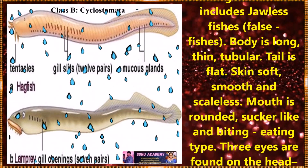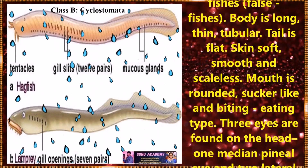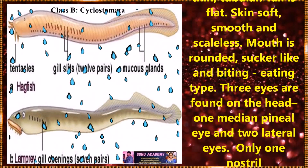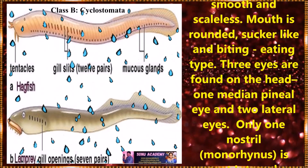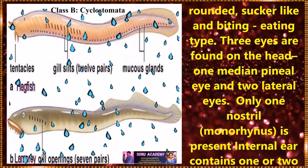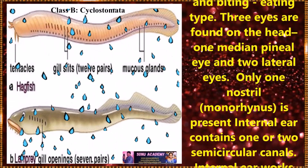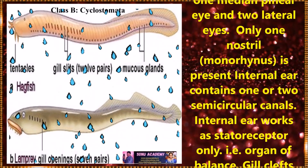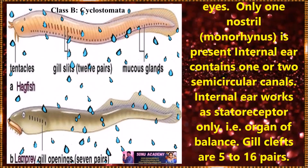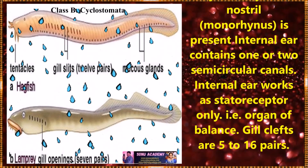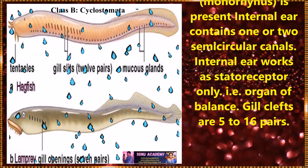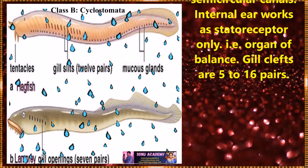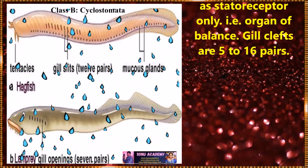Skin is soft, smooth, and scaleless. Mouth is rounded, sucker-like and eating type. Three eyes are found on the head: one median pineal eye and two lateral eyes. Only one nostril is present. The internal ear contains one or two semicircular canals and works as a statoreceptor only, that is, an organ of balance.